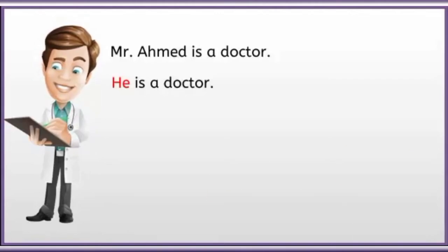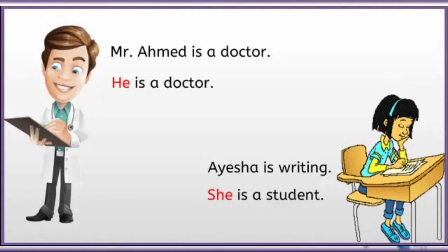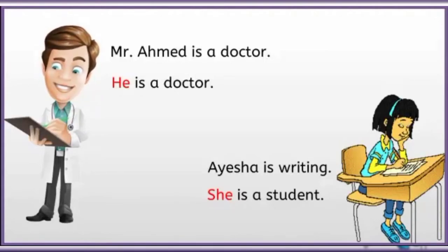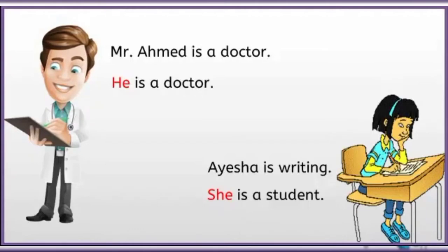Next comes the use of she. Let me show you how. Aisha is a student. We can easily see that Aisha is a female. She is writing and she is a student.